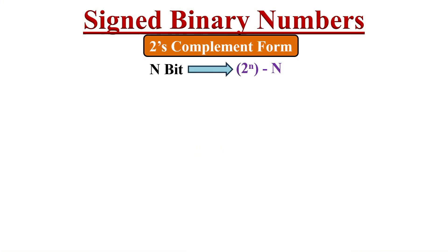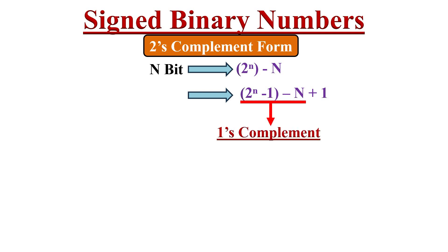Observing the two's complement formula 2 to the power of n minus N, it can be expanded as 2 to the power of n minus 1 minus N plus 1. The part 2 to the power of n minus 1 minus N is actually the one's complement of the number. Therefore, taking the one's complement of a number and adding 1 gives the two's complement of that number, confirming the second method.